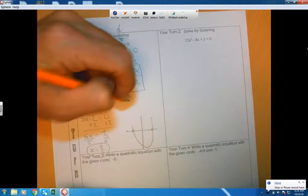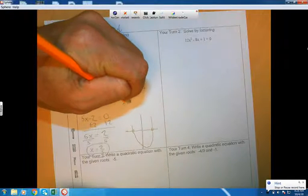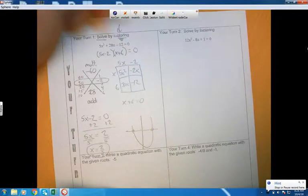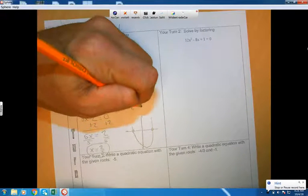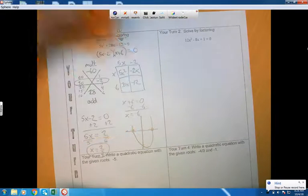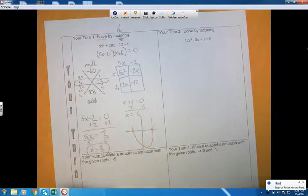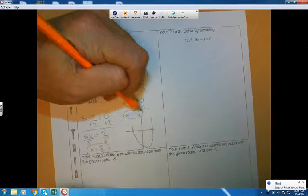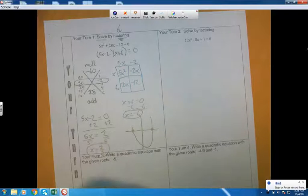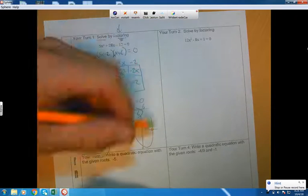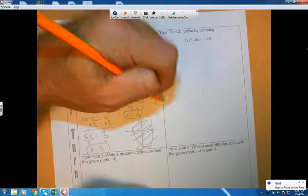And this will also tell us the other place where it hits the ground. So x plus 6 hits the ground at negative 6.